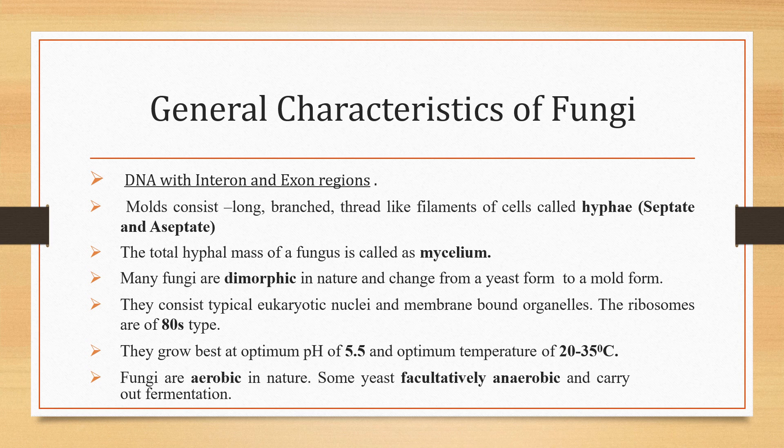Most fungi are dimorphic in nature and can change from a yeast form to a mold form. Fungi have membrane-bound cytoplasmic organelles such as mitochondria, sterol-containing membranes, and ribosomes of the 80S type. They grow best at an optimum pH of 5.5 and an optimum temperature of 20 to 35 degrees centigrade. Most fungi are aerobic in nature, but some yeasts are facultatively anaerobic and carry out fermentation.